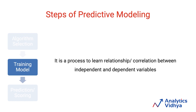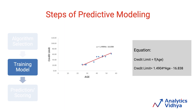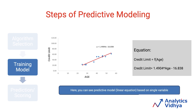Now that we have selected an algorithm, we need to train the model. Model training is the process where the model learns the relationships, correlations, or associations between independent and dependent variables. Here is a simple model built using linear regression with one independent variable — age — that predicts credit limit as a function of age. As age increases, the credit limit typically increases, meaning credit limit is positively correlated with age. The linear equation that fits the data is: credit limit = 1.4904 × age − 16.838. You can also use other algorithms like tree-based algorithms to come up with different results.